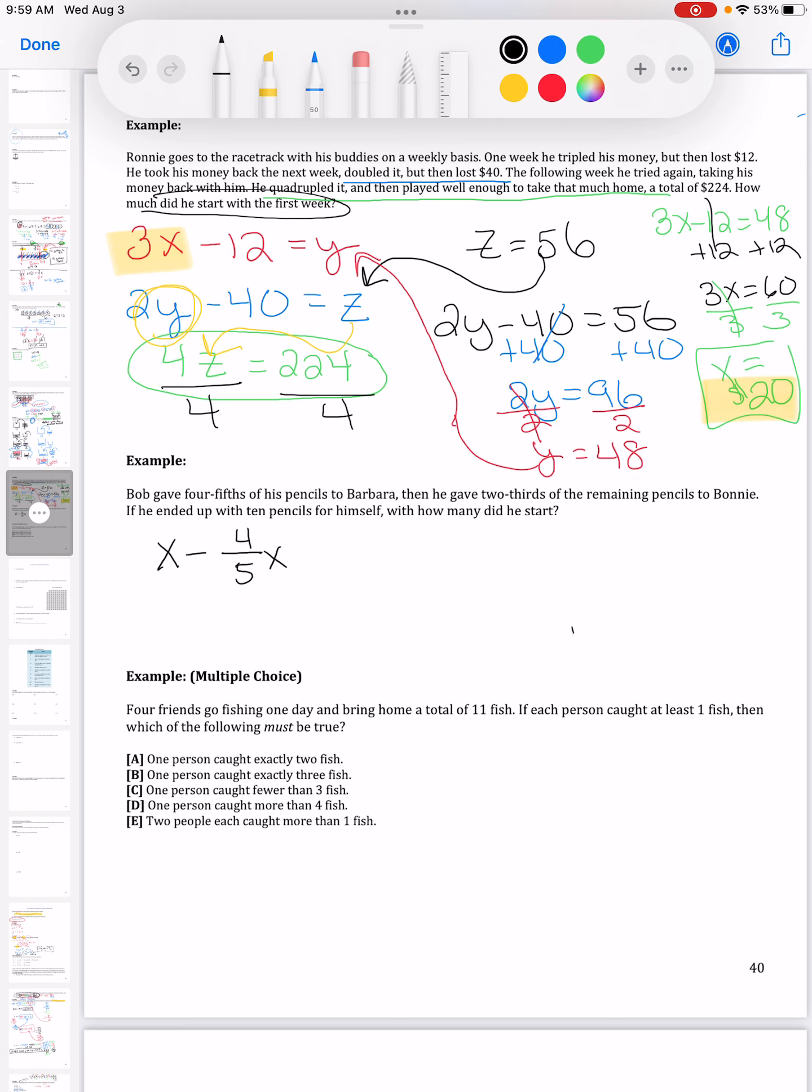We're going to give away, so that's going to be subtracting four-fifths of our pencils to Barbara. So if I've got one whole set of pencils and I give away four-fifths, I'm just going to kind of come over here, we could type this in our calculator.